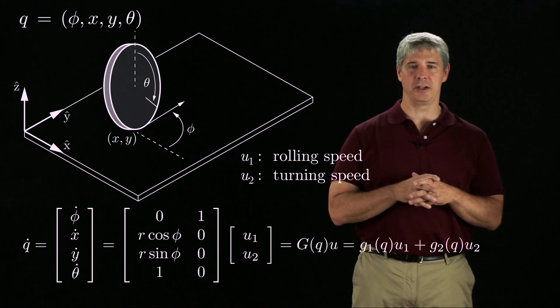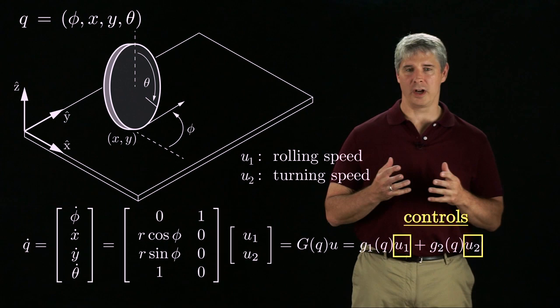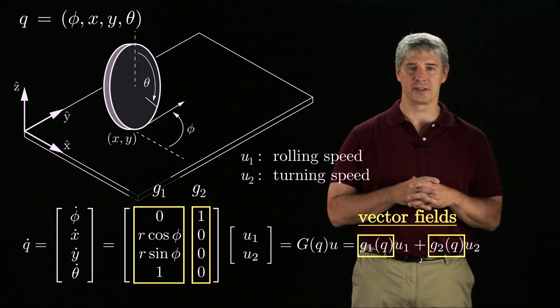G of Q times U can be written G1 of Q times U1 plus G2 of Q times U2, where U1 and U2 are called the controls, and G1 and G2 are called vector fields.